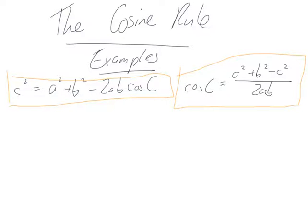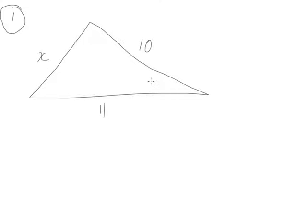Alright, without further ado, let's get a question up here. Question 1, we'll take x, we'll take 10, and we'll take 11, and we'll take this being 40 degrees. Okay, so we talked about when to use the cosine rule before. If you look back at the formulas, you'll notice they all involve three sides, one angle. So I've got here one, two, three sides and an angle. So this is definitely going to be a nice cosine rule question.